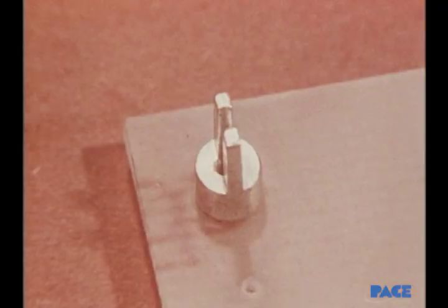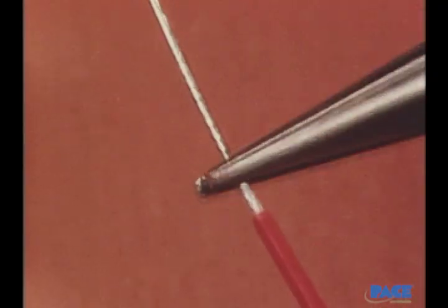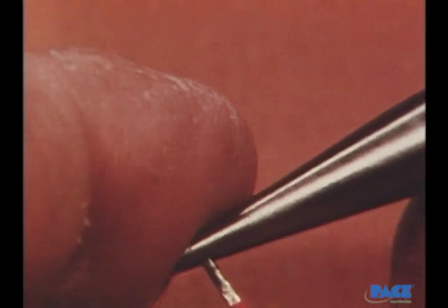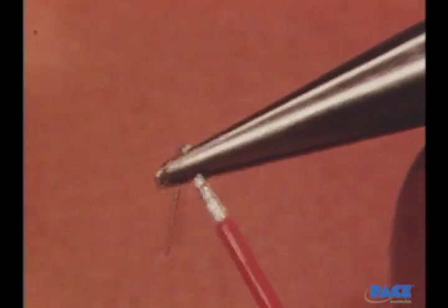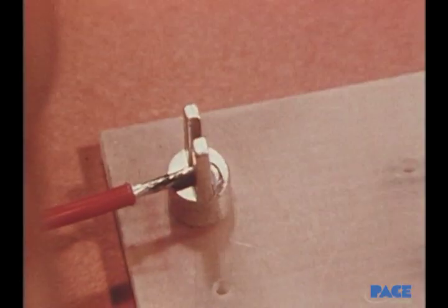As shown here, let's watch the joint being made. First, the tinned wire is put across the terminal to determine the proper insulation gap. Then a 90 degree bend is put in using a pair of chain nose pliers. The wire is positioned and then trimmed so that none of it protrudes beyond the diameter of the terminal.